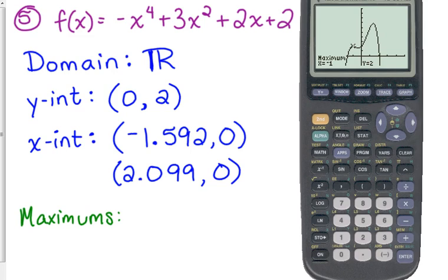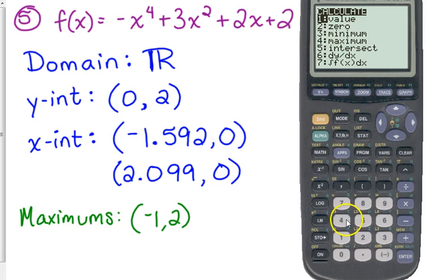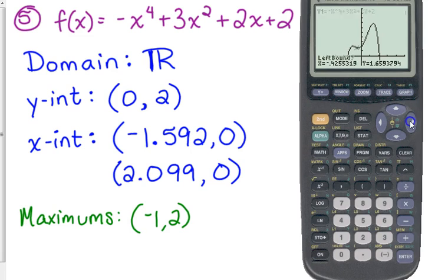Now, I'm going to say maximums because I have two of them. (-1, 2) is one. And while I'm doing maximum, I'm going to go ahead and find the other. And I'm going to do the same thing. Second trace maximum. I'm going to move my cursor over here to the maximum on the right side of the graph. Find that one. 1.366, 6.848.